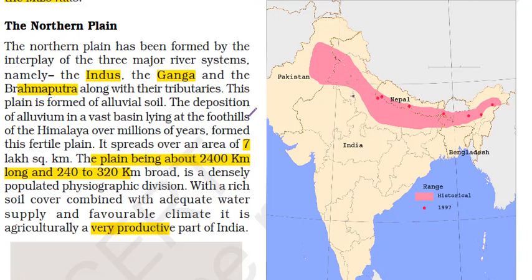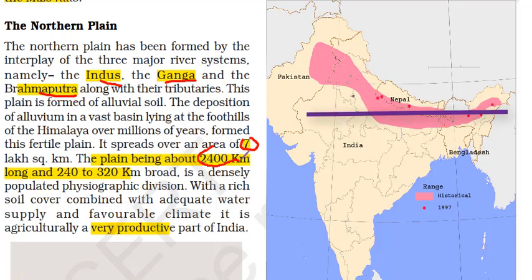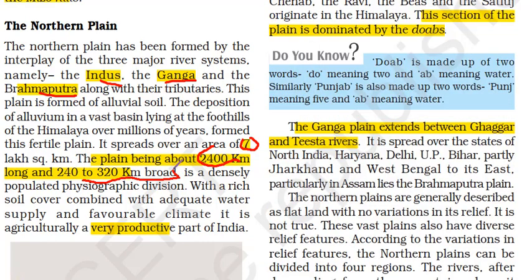The northern plain is formed by the interplay of three major river systems — the Indus, the Ganga, and the Brahmaputra along with their tributaries. This plain is formed of alluvial soil with an area of around 7 lakh square kilometers. Its length is 2,400 kilometers, same as the Himalayas, and its width is 240 to 320 kilometers. It is a very densely populated physiographic division with rich soil cover, adequate water supply and favorable climate, making it very productive agriculturally.